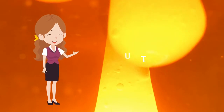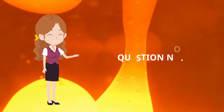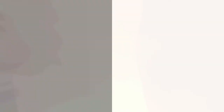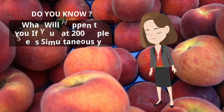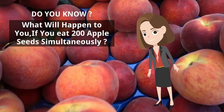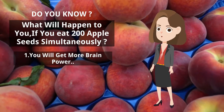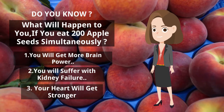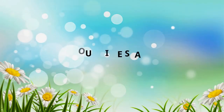We completed our first intermediate level question. Now we will see our next intermediate level question: what will happen to you if you eat 200 apple seeds simultaneously? The options are: Option 1 is you will get more brain power, Option 2 is you will suffer kidney failure, Option 3 is your heart will get stronger, and Option 4 is you will die. Your time starts now.